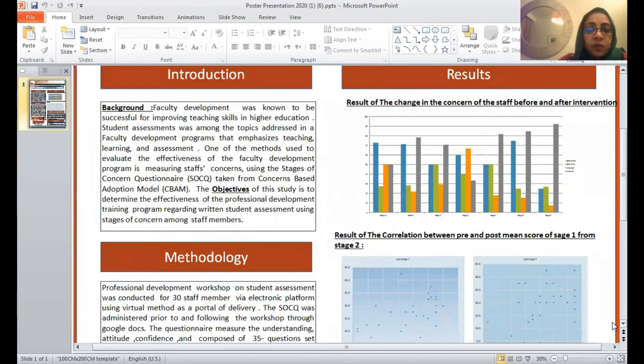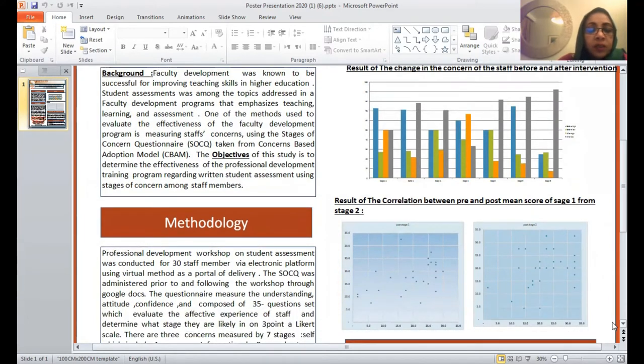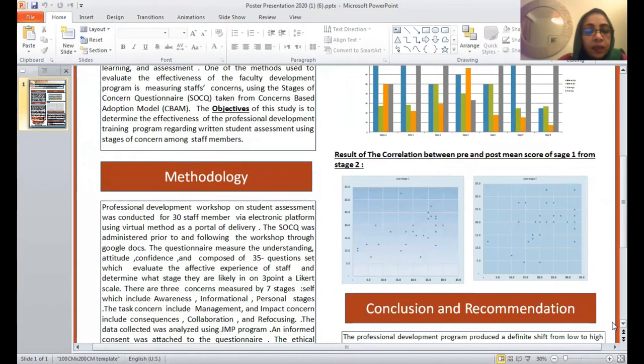The methodology consists of professional development workshops on student assessment for certain staff members via electronic platform using virtual method as a portal of delivery. The stages of the concern questionnaire was administered prior to and following the workshop through Google docs. The questionnaire measures the understanding, attitude, confidence, and is composed of 35 question sets which evaluate the effective experience of staff and determine what stages they are likely in on a three-point Likert scale.